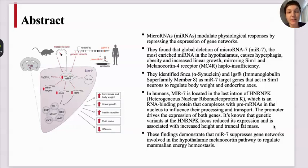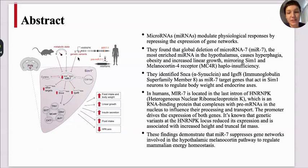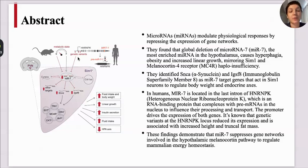In humans, microRNA-7 is located in the last intron of the heterogeneous nuclear ribonucleoprotein K, which is an RNA binding protein that comes with primary RNA in the nucleus to influence their processing and transport. The promoter drives the expression of both genes, and it is known that genetic variants on this ribonucleoprotein K locus reduce its expression and are associated with increased height, but more importantly, with an increase of truncal fat mass. These findings demonstrate that microRNA-7 suppresses gene networks involved in the hypothalamic melanocortin pathway to regulate mammalian energy homeostasis.